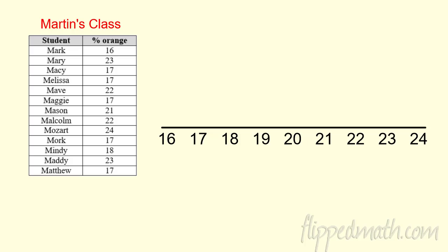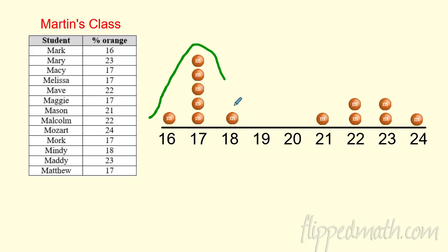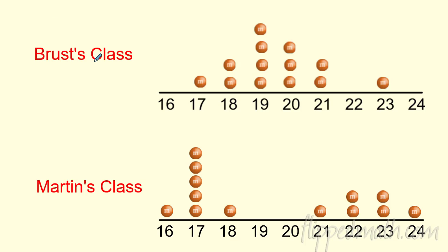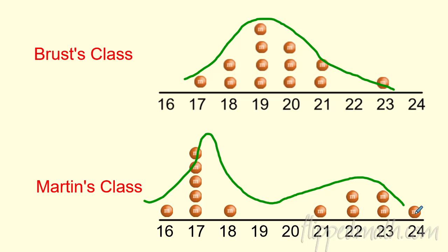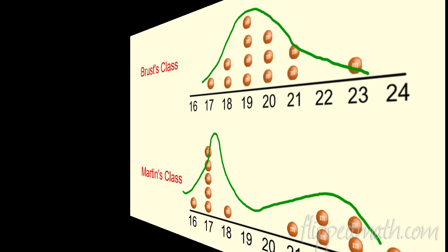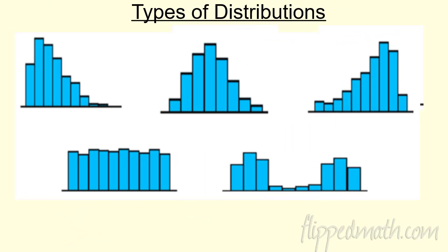How about Mr. Martin's class? I graphed his class for you — totally different results. He's got a grouping down here and another grouping up here. Either they got a lot or maybe a little — very different than Mr. Brust's class. Mr. Brust's data groups right in the middle, while Mr. Martin's is all over the board with two distinct groupings. Mr. Martin had nobody in the 19s and 20s — that gap is where almost all of Mr. Brust's data fell. Very different distributions.